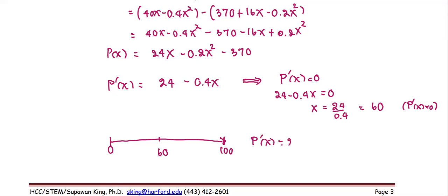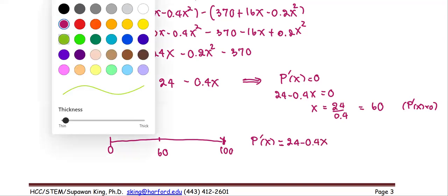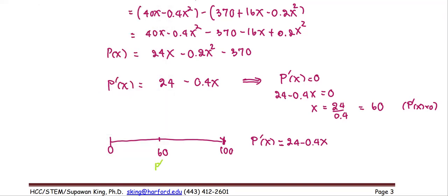P prime is 24 minus 0.4x. At 60, P prime is 0. This is a breaking point. We look at x between 60 and 100. Pick a number, for example, 80. If we pick 80, 8 times 4 is 32, so P prime is going to be negative in sign, less than 0.